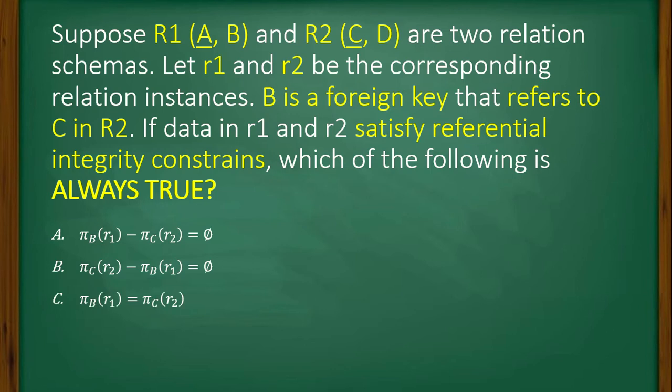Option C: Pi subscript B of r1 equals Pi subscript C of r2. Option D: Pi subscript B of r1 minus Pi subscript C of r2 not equal to empty set.